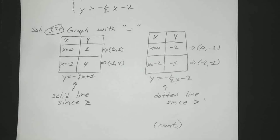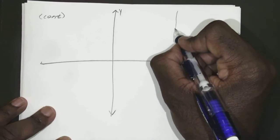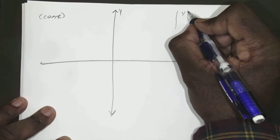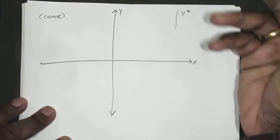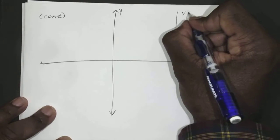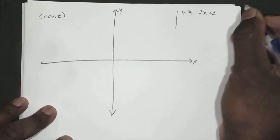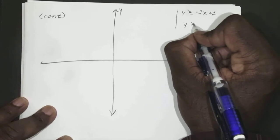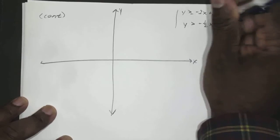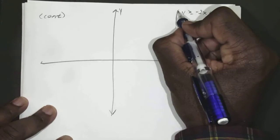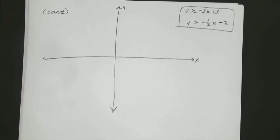All right. So, I'm just going to go ahead and graph them. Remember, we're graphing, we might as well put the original, y greater than or equal to negative 3x plus 1, and y is greater than negative 1 1⁄2 x minus 2.